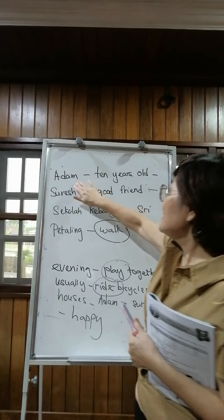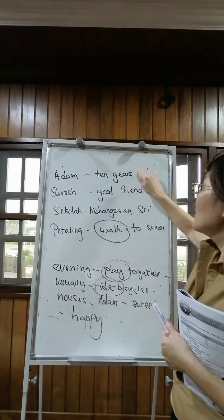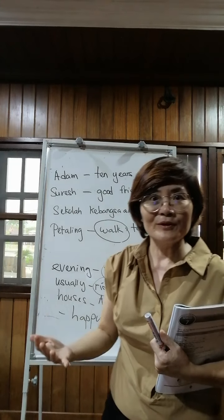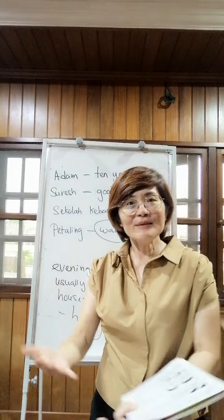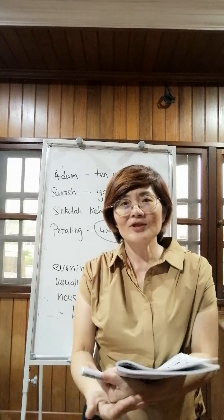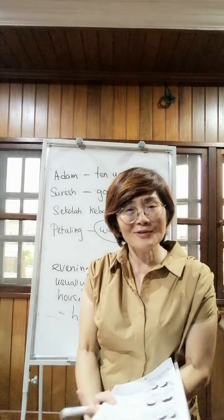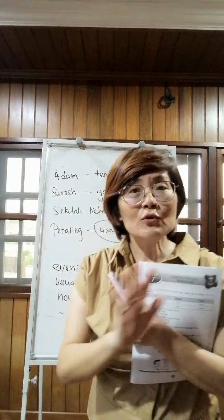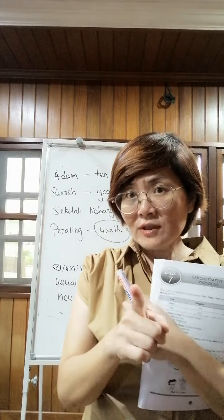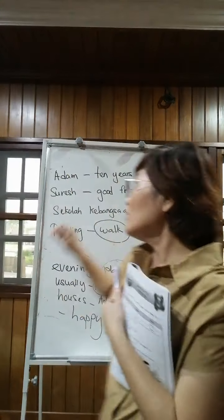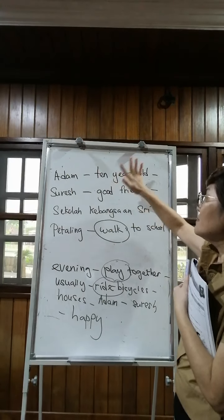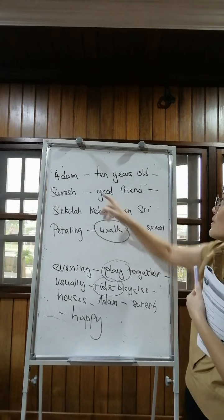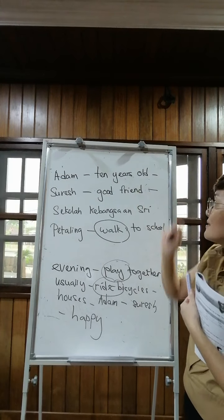So, here we go. Adam, 10 years old. So rich, good friend. What to do? Adam, 10 years old — how to say? Adam is 10 years old. You don't use 'was', okay? So, Adam is 10 years old.